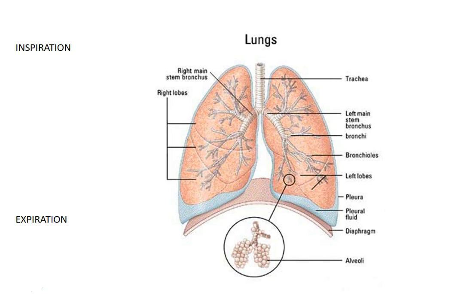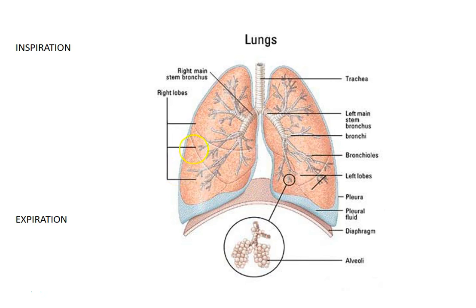When you have a collapsed lung — technically called a pneumothorax — the intrapleural pressure is lost. If someone is stabbed or suffers trauma such as being hit by a steering wheel or airbag, it can interfere with intrapleural pressure, negating the difference between atmospheric and intrapleural pressure and causing the lung to collapse.